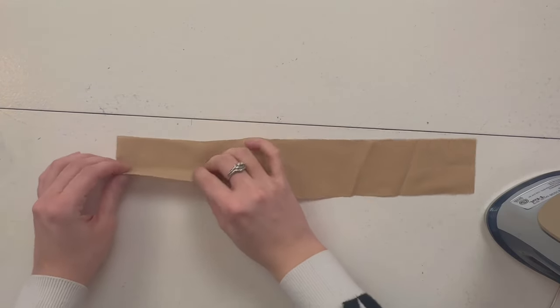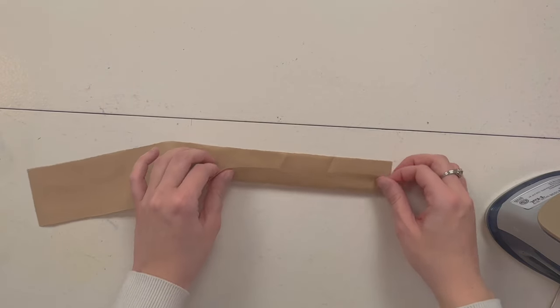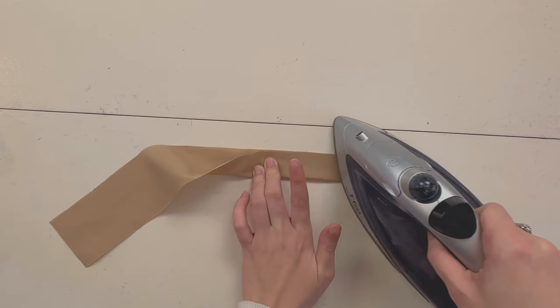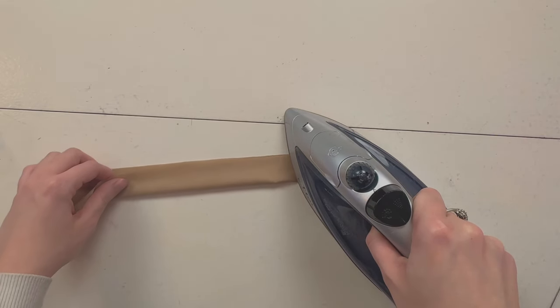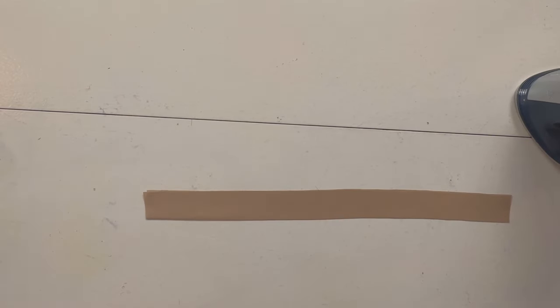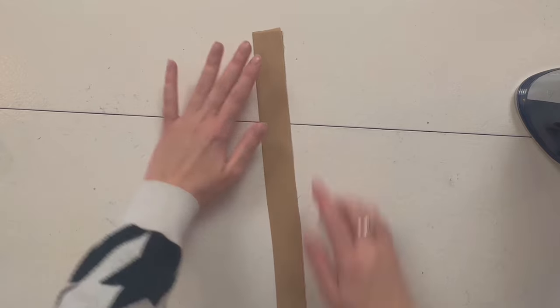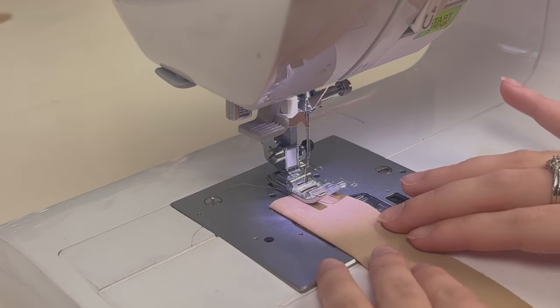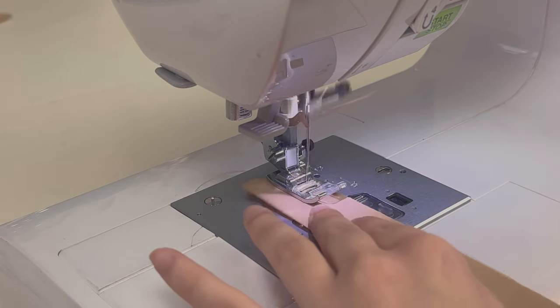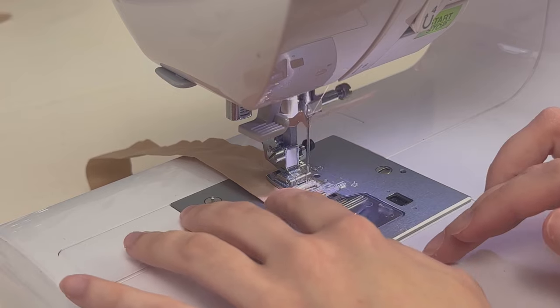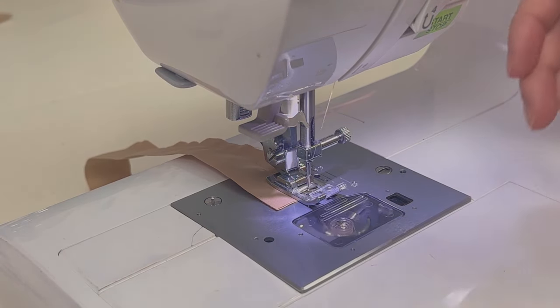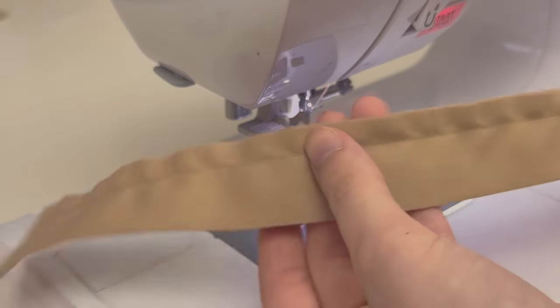So let's take our iron and fold our strap right sides together. What you could also do is just pin it instead. Okay, there we go. Now just take it to your machine and sew all around that edge. Okay, let's start sewing. Backstitch. And there we go.